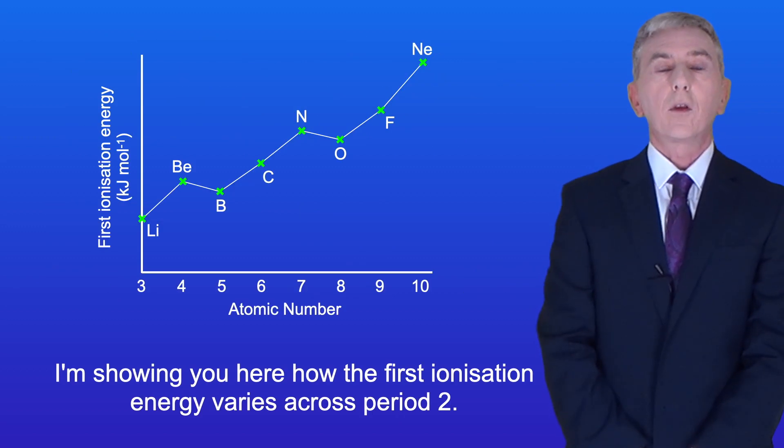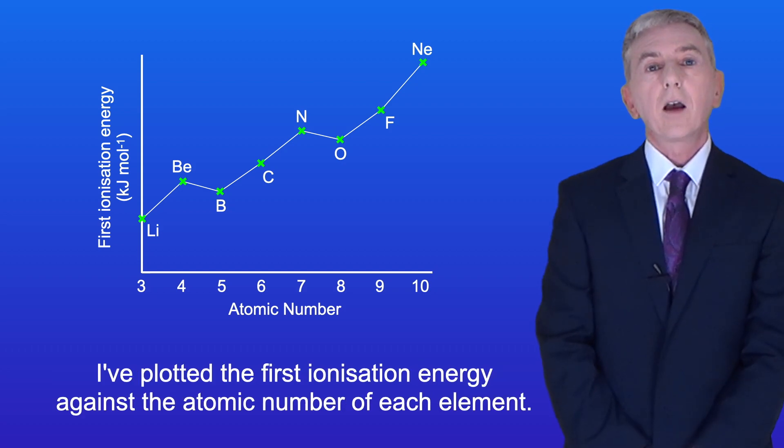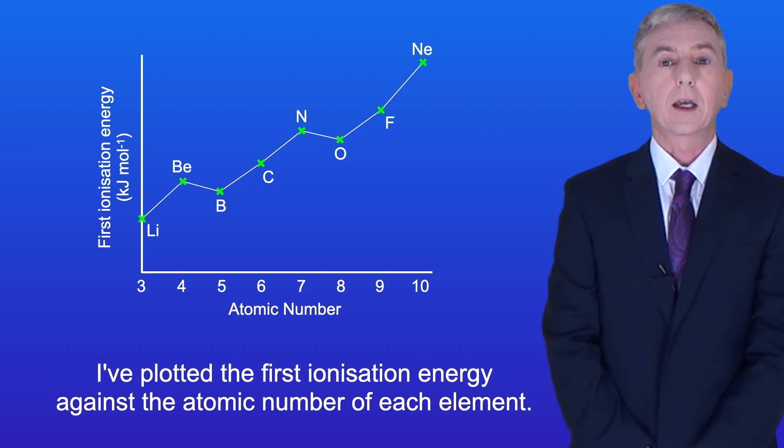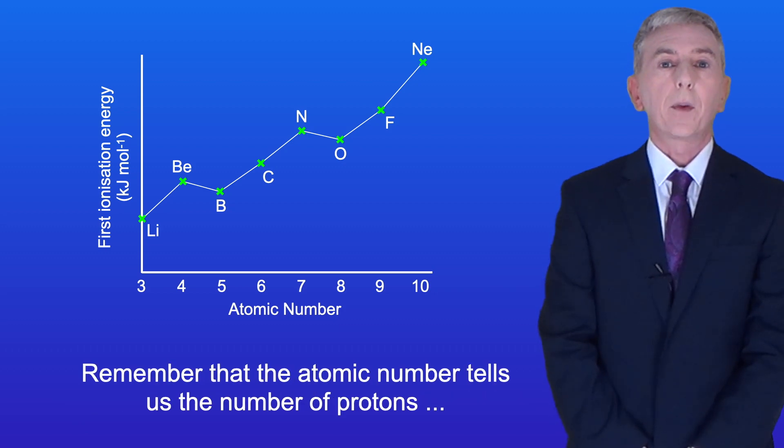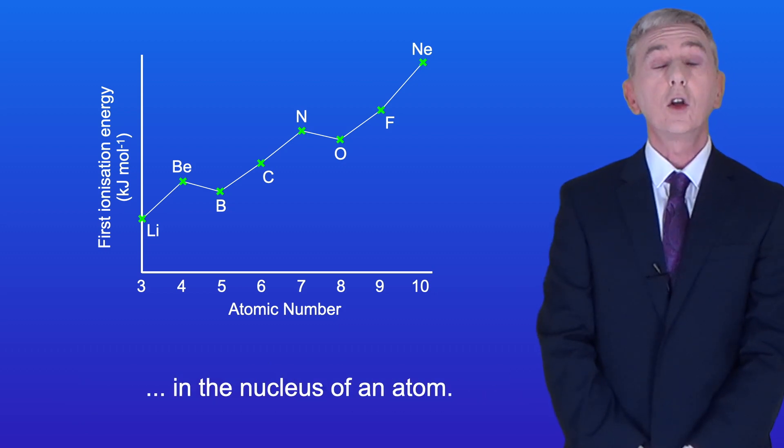I'm showing you here how the first ionization energy varies across period two. I've plotted the first ionization energy against the atomic number of each element. Remember that the atomic number tells us the number of protons in the nucleus of an atom.